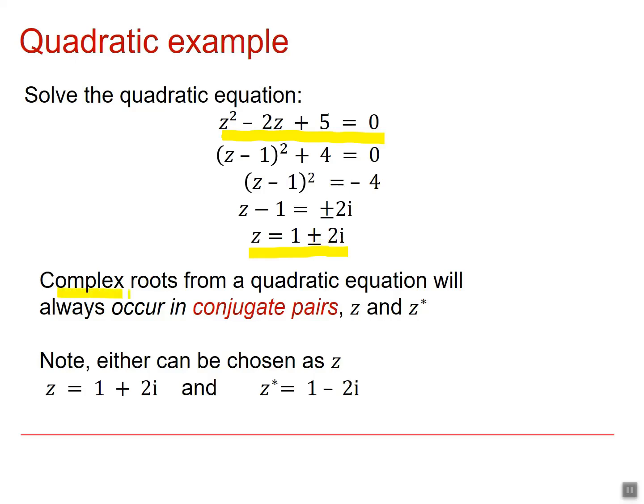Complex roots from a real quadratic equation will always occur in conjugate pairs, and we denote them Z and Z star. Note that either of the two values could be chosen as Z, with the other one being its conjugate.